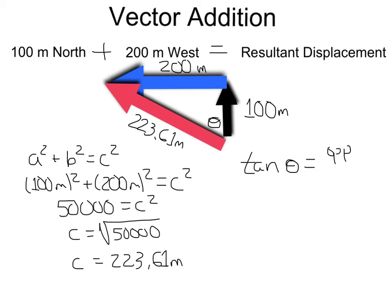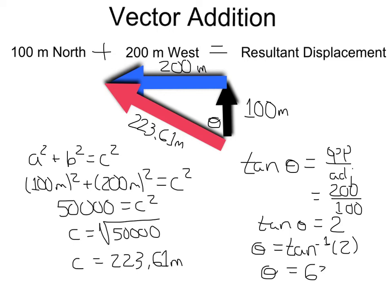So the side opposite of that angle is 200. The adjacent side is 100. So that's going to give us tangent of the angle is equal to 2. To find the angle then, we need to take the inverse tangent, tan minus 1, of 2. If you do that on your calculator, the inverse tangent of 2 is actually 63 degrees. That gives us an angle of 63 degrees.